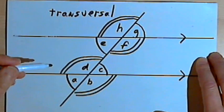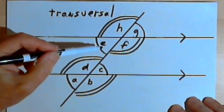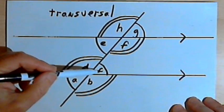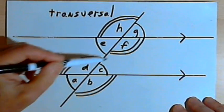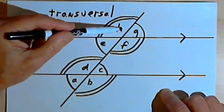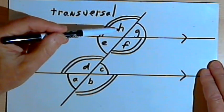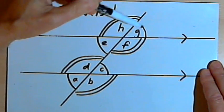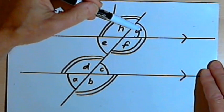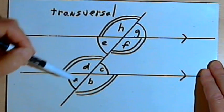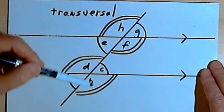Alternate interior angles are any angles that are between the two parallel lines, with one on each side of the transversal. C and E are alternate interior angles and are equal; D and F are also alternate interior angles and are equal. Exterior angles are on the outside of the parallel lines — like A, B, H, and G — and they also occur in alternate pairs. Angle A and angle G are alternate exterior angles and are equal; angle B and angle H are also alternate exterior angles and are equal.